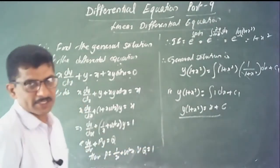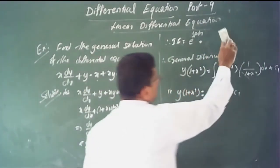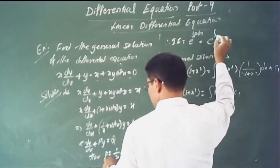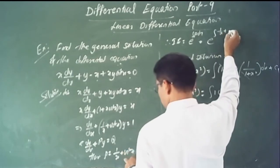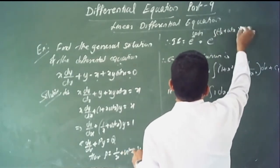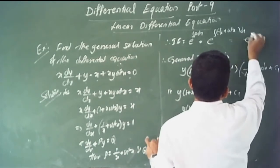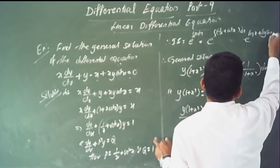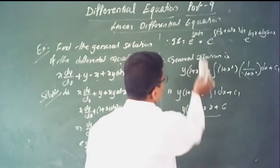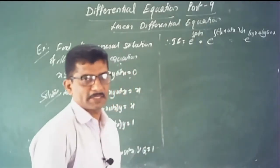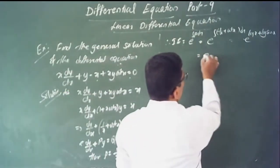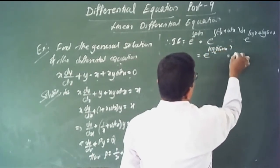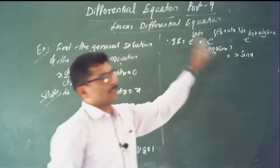Find the integrating factor: e to the power of the integral of p dx equals e to the power of the integral of (1/x plus cot x) dx. This equals e to the power of (log x plus log sin x). Using the property log m plus log n equals log(mn), the integrating factor is x times sin x.